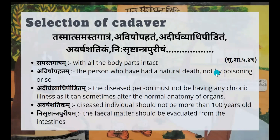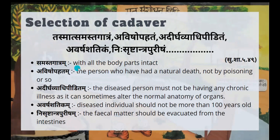Now let's see how the selection of cadaver is done. The continuation of the previous verse provides criteria for selecting the ideal cadaver. Samastha Gatram refers to an intact body or a complete body — the body procured for dissection should have all its parts intact.